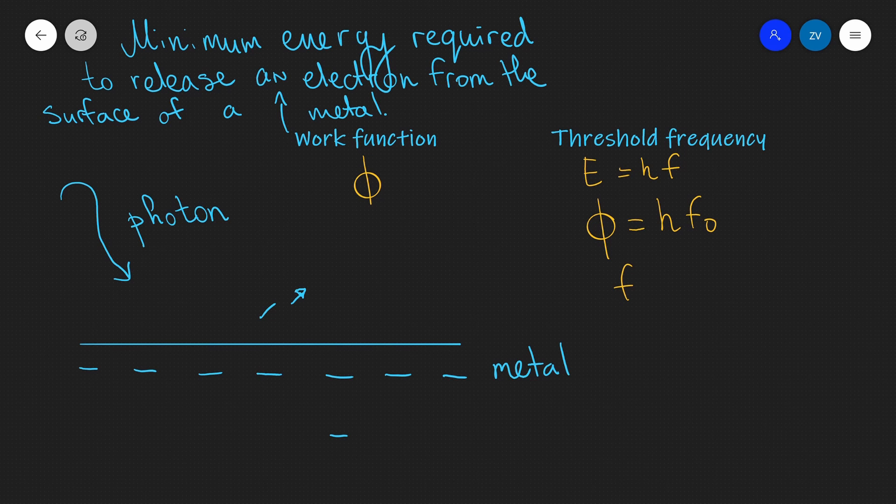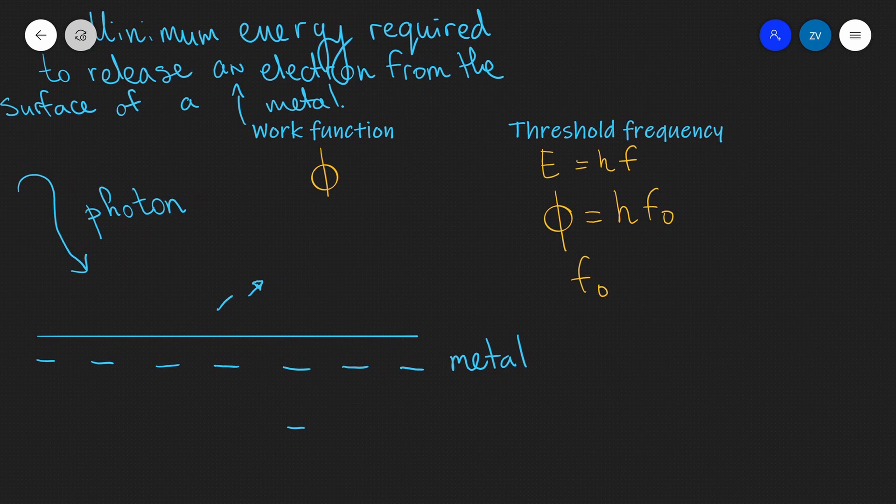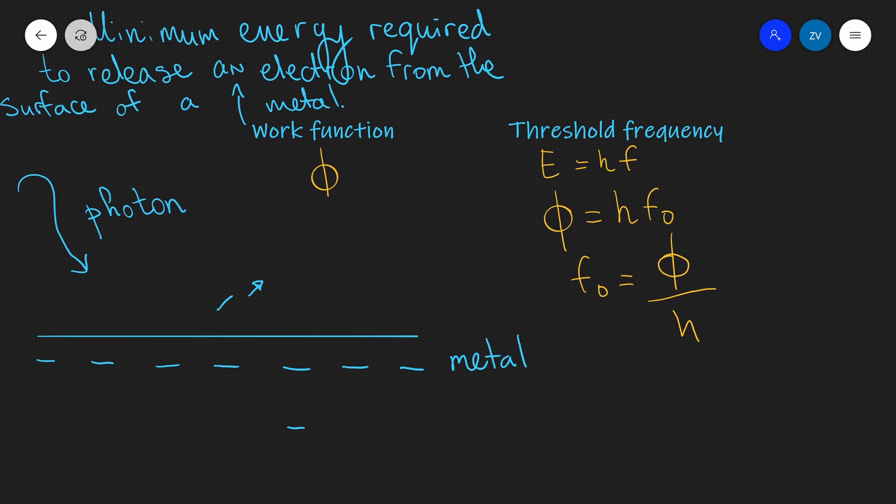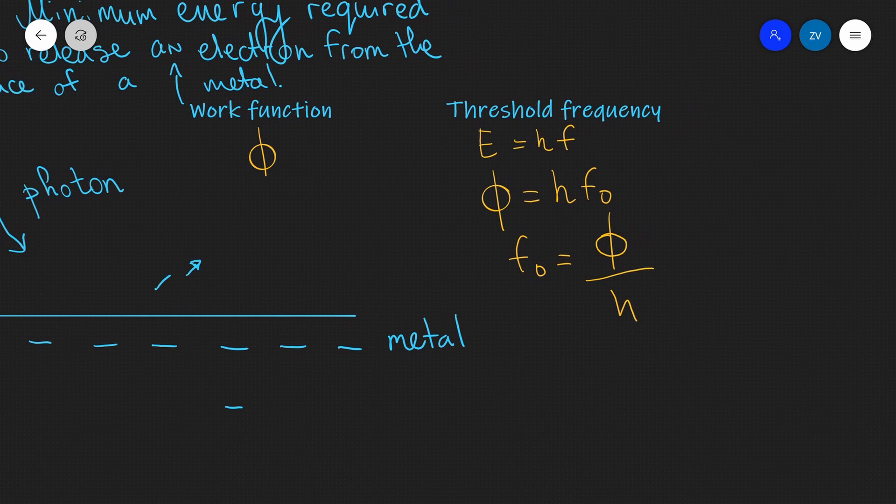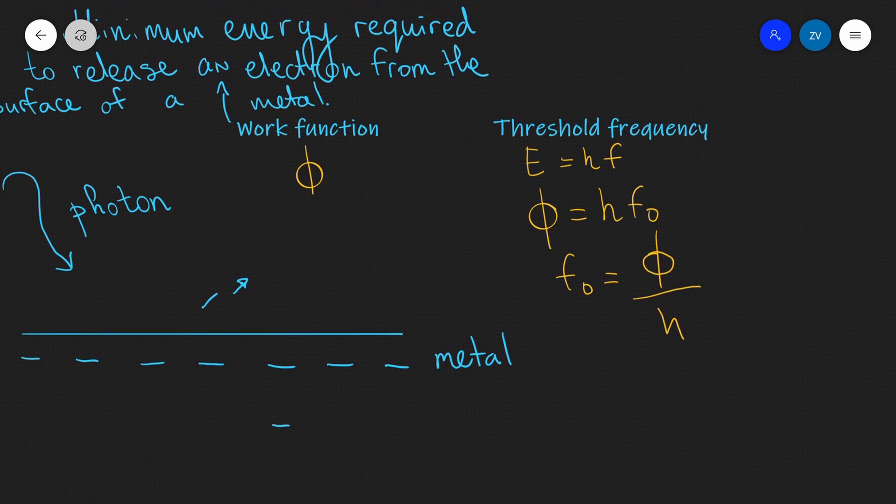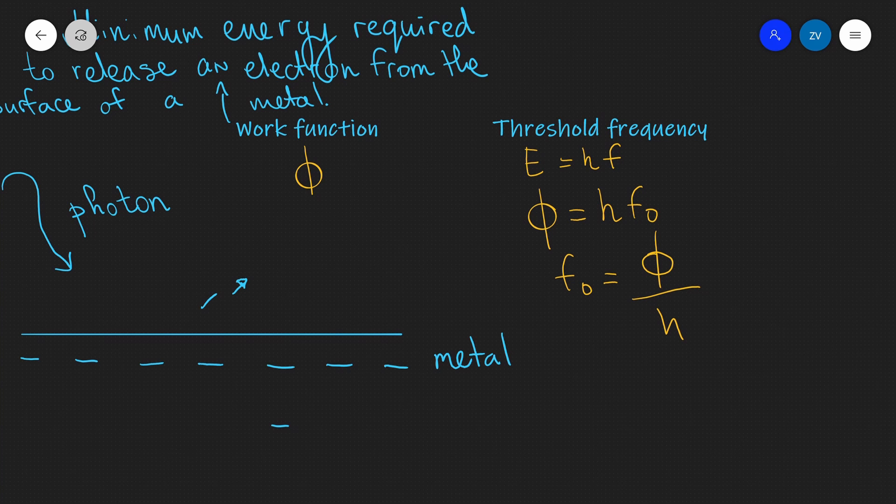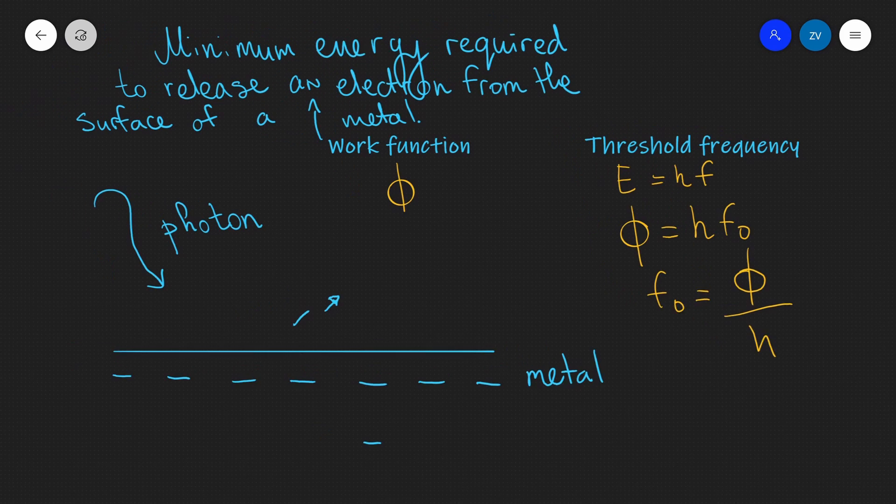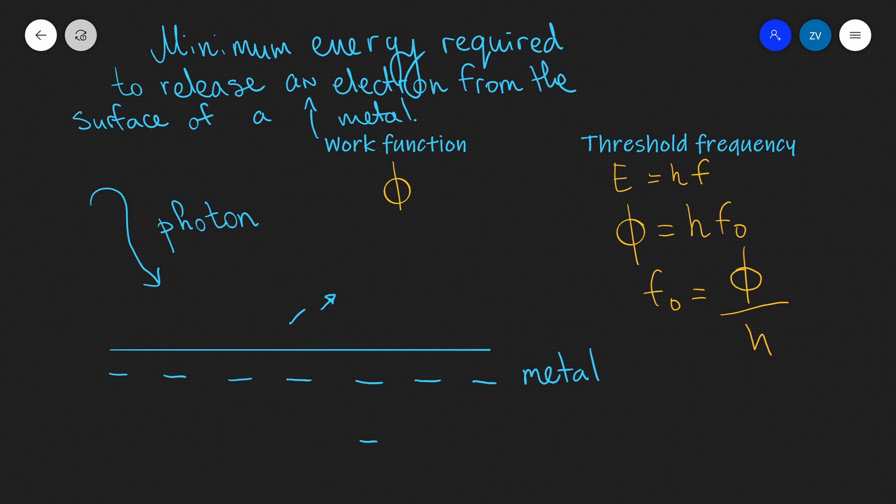The mathematical equation for the threshold frequency, normally given the symbol F0, is just the work function divided by Planck's constant H. In practice, the threshold frequency is the frequency of a photon, above which an electron is emitted from the surface of a metal.